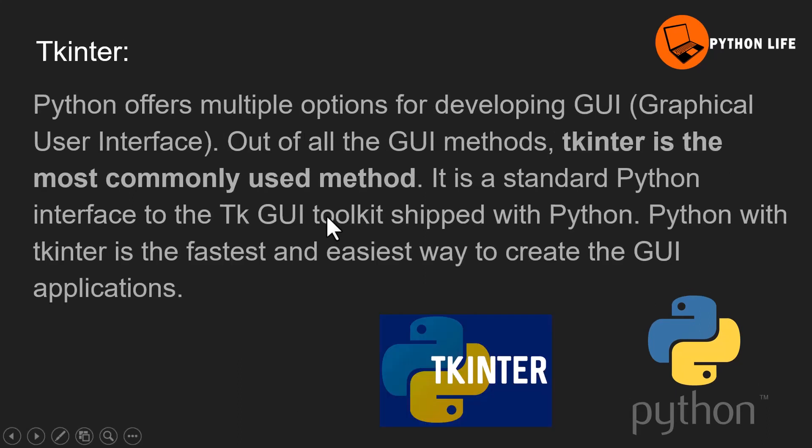Next library is Tkinter. Python offers multiple options for developing GUI (graphical user interface) applications. Out of all the GUI methods, Tkinter is the most commonly used method. It is the standard Python interface to the Tk GUI toolkit shipped with Python. Python with Tkinter is the fastest and easiest way to create GUI applications. Simple projects like calculator apps and weather forecasting apps are developed using the Tkinter library.